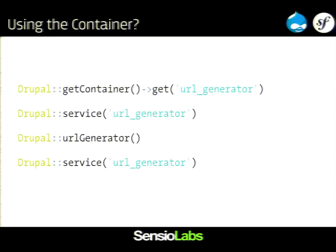In Drupal, there are many ways you can use the dependency injection container. There is this Drupal class where you can say 'service()' and give it a name to return the service you want. There are some shortcuts for some very important services. Whenever you are using those static methods, feel bad — because it's not using dependency injection anymore. It's mostly for all the procedural code that is still in Drupal 8. If you are not in an object, you can't really inject the dependencies you need — then you can use this. But if you are using this in a class, that's a no-go.